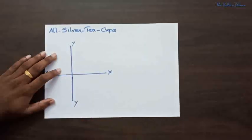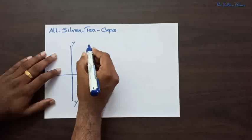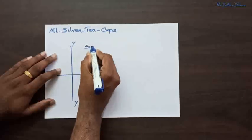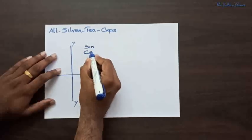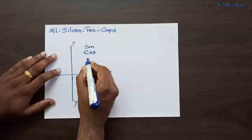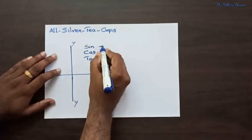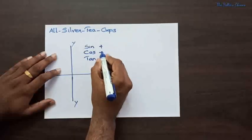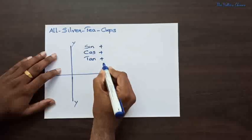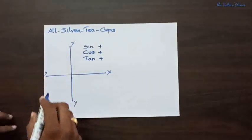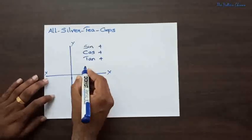For this proof and explanation of how 'All Silver Tea Cups' has been introduced, I am taking the X-Y axis. In the first quadrant, as I mentioned, sine is positive, cos is positive, and tan is also positive — that is in the first quadrant.